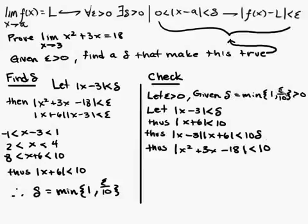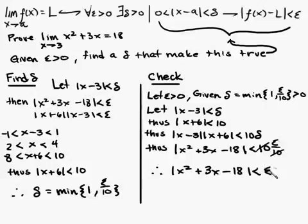If a is equal to b or c, well, then I'm just going to replace a with b or c. So in this case here, I'm going to replace it with the epsilon over ten. And then they cancel out. Hence, x squared plus three x minus eighteen is less than epsilon.